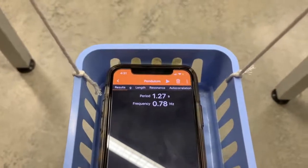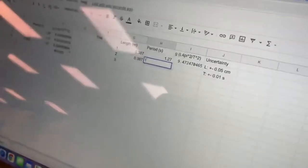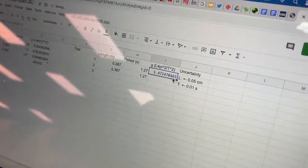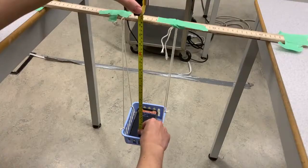Using the PhyPhox pendulum option, we were able to determine the period. Once this period reading stayed constant, we recorded it in a spreadsheet. For every trial, we also determined the length of the string from the ruler to the surface of the phone using a tape measure.